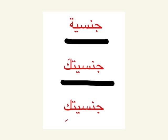We add a kaff and fatha at the end of the word. If we want to say 'your nationality' to a female, we say jinsiya tuki. We add a kaff and a kasra at the end of the word.